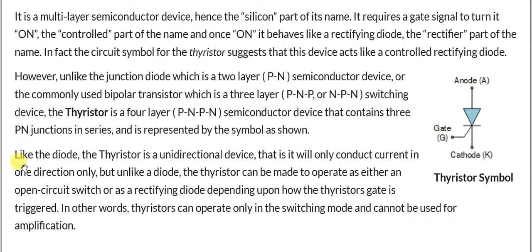Like the diode, the thyristor is a unidirectional device — it allows current to flow in one direction only. The difference between the thyristor and the diode is that with a diode, once you apply the forward biasing voltage, current flows continuously. But in the thyristor we have a gate, and unless this gate is activated with a sufficient voltage to forward bias the internal junction, current will not flow.